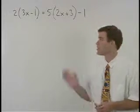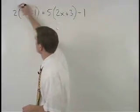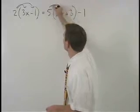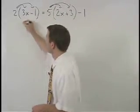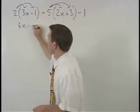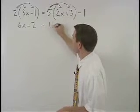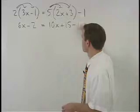In this equation, we start by distributing through the parentheses on both sides. On the left, we get 6x minus 2, and on the right, we get 10x plus 15 minus 1.